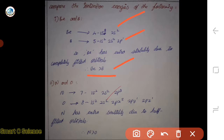The subshell is completely filled, so the ionization energy is stable. Therefore, Be is less than B. As a result, Be's ionization energy will be more than B's. So Be > B in ionization energy.